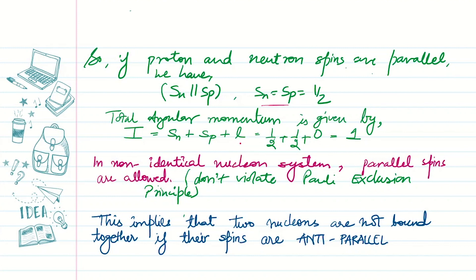and the orbital angular momentum L. Since L equals zero and S_n and S_p are both 1/2, we get the total angular momentum to be 1.